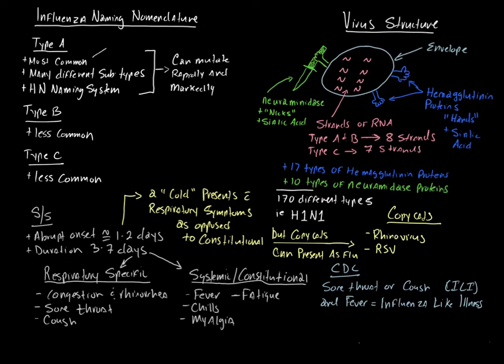Okay, so type A. So type A influenza is the most common. Many, many, many, many different subtypes. Actually, at least 170 different subtypes of influenza A. There's so many different subtypes of type A influenza that we have what we call the HN naming system, and I'll talk about what that means. And this thing can mutate very rapidly and markedly, okay? And then your type B and type C are less common and less severe and less mutogenic, type C being the least severe and the least mutogenic. So before we talk about the naming and all that, let's just talk about signs and symptoms. What differentiates the flu from a run-of-the-mill viral upper respiratory infection or URI?